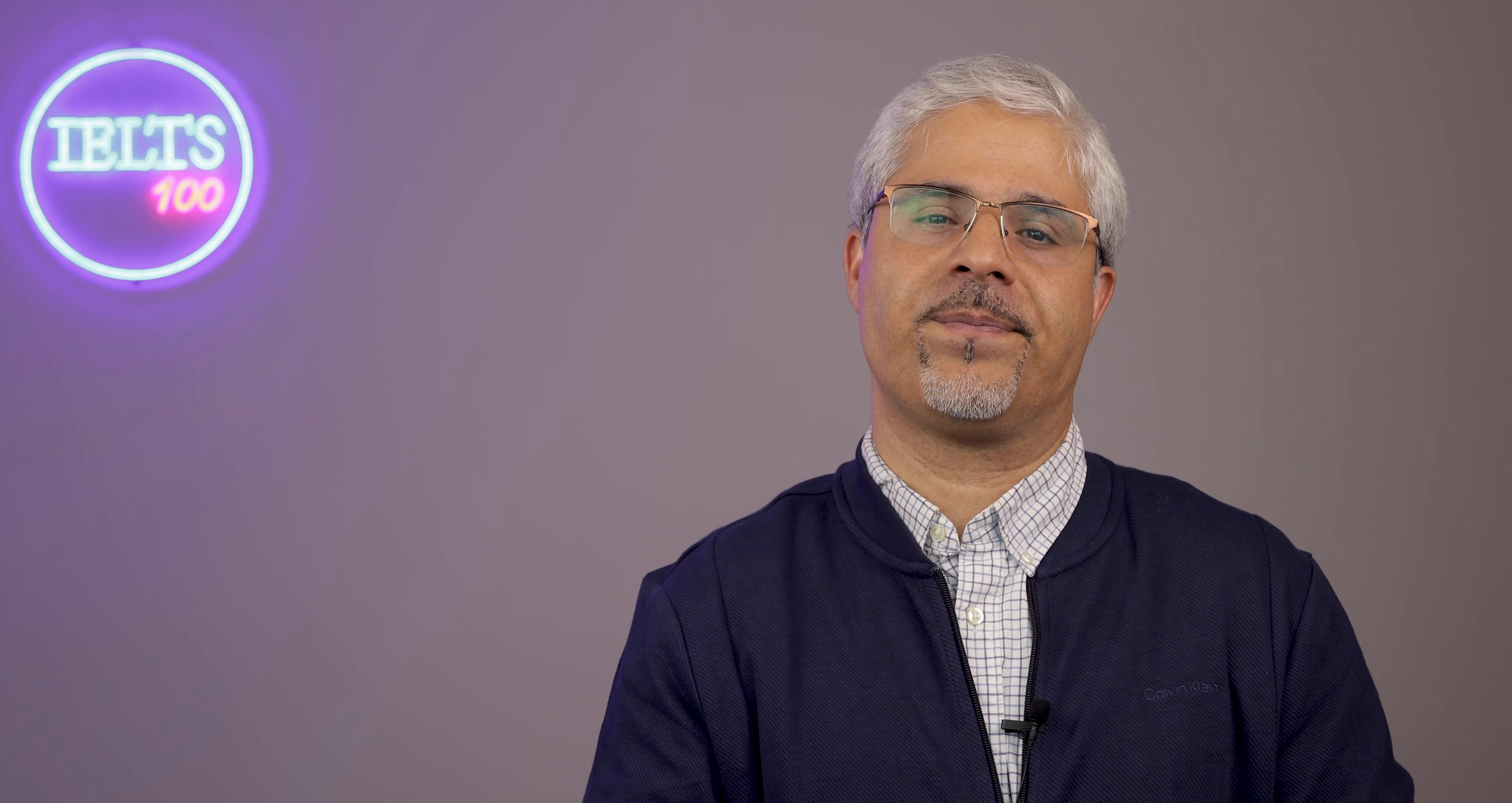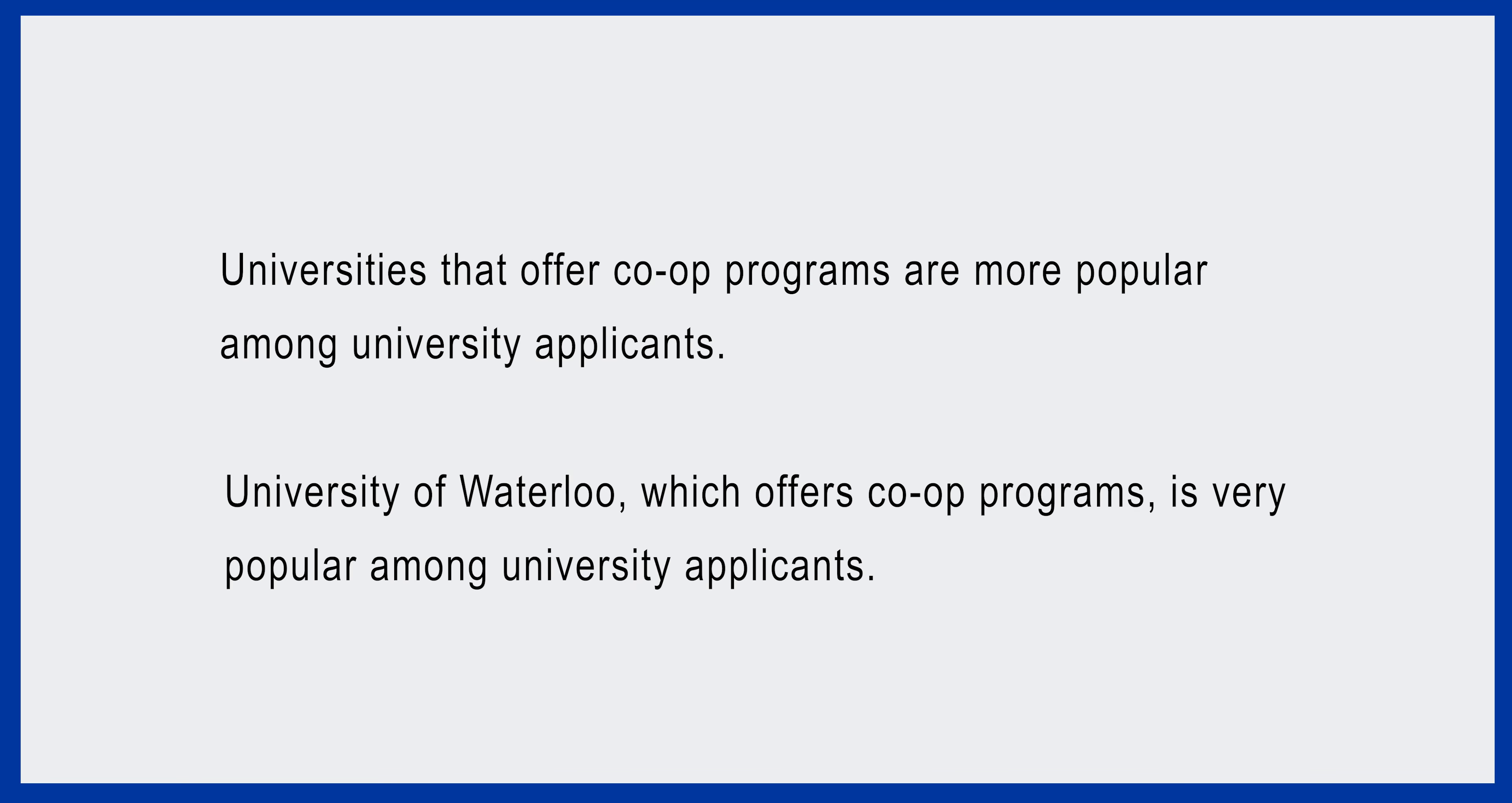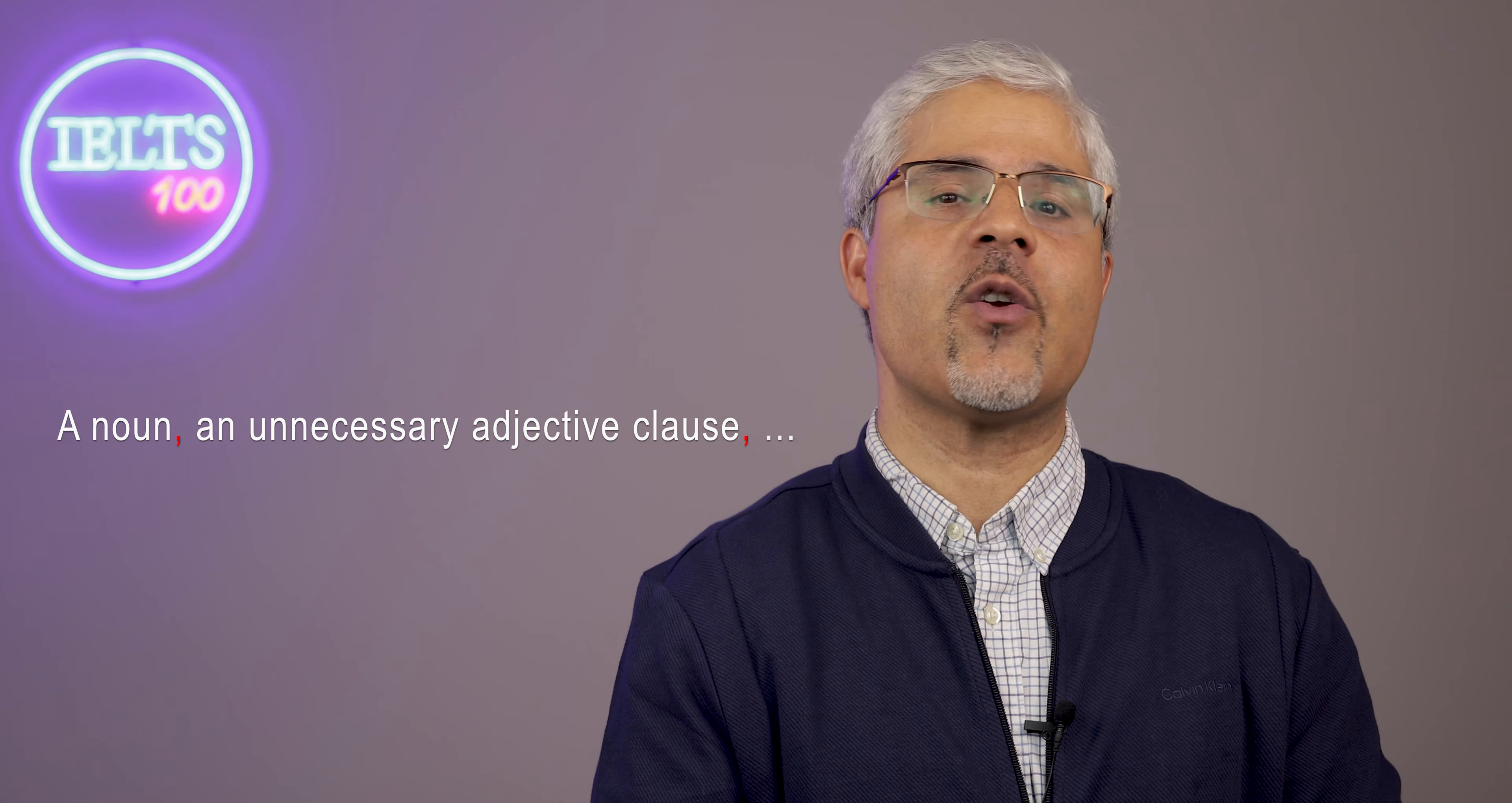Now, look at this example. University of Waterloo, which offers co-op programs, is very popular among university applicants. In this sentence, 'which offers co-op programs' is an adjective clause that provides more information about the University of Waterloo. However, there is a difference between the two adjective clauses. As you can see, the first one is necessary to identify the universities, while the second one is not necessary to identify the University of Waterloo, since the University of Waterloo is identifiable without the adjective clause.